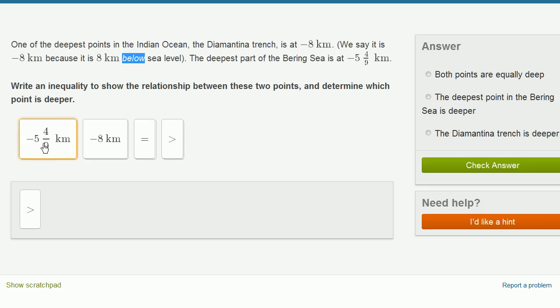This number, negative 5 and 4 ninths, it is less negative. So it's actually going to be a greater value. It's not as deep. So we can write negative 5 and 4 ninths is greater than negative 8. Or negative 5 and 4 ninths kilometers is greater than negative 8 kilometers. And so if we're thinking about which point is deeper, it's going to be the one that's more negative because that tells us how far below sea level we are. So the negative 8 kilometer point is further below sea level.